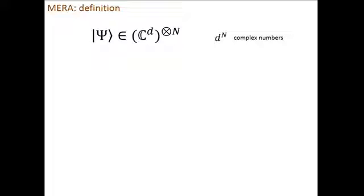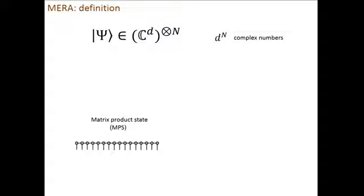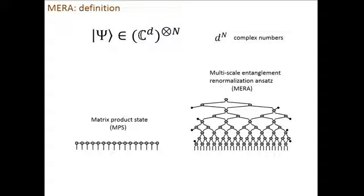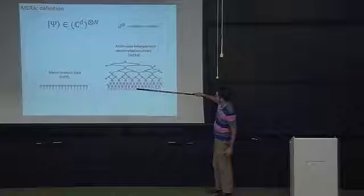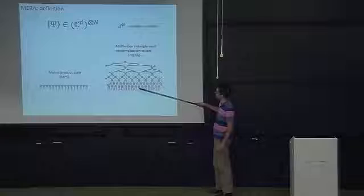Today we want to talk about another tensor network. Our aim is the same: to represent a wave function. The matrix product state is an ansatz for ground states in one dimension. The multiscale entanglement renormalization ansatz, or MERA, will also be a variational tensor network ansatz for ground states in one dimension. The open indices are organized in a one-dimensional array, so the sites of your lattice are along the bottom. However, an obvious difference is that this tensor network is not constrained to a one-dimensional array — it explores an additional dimension.